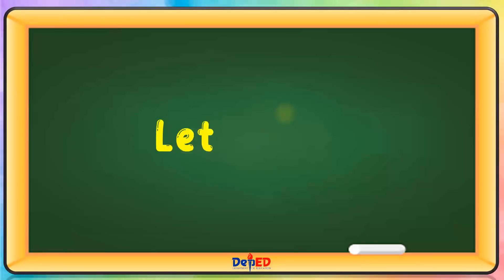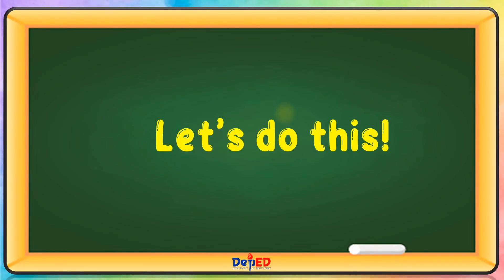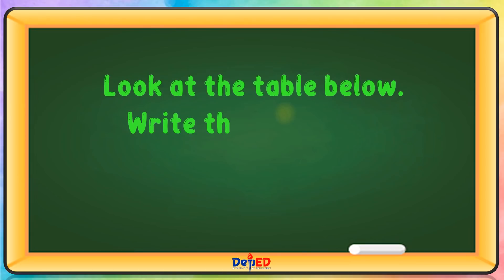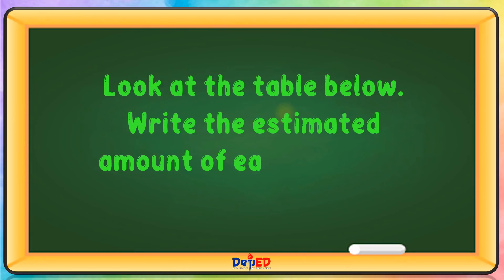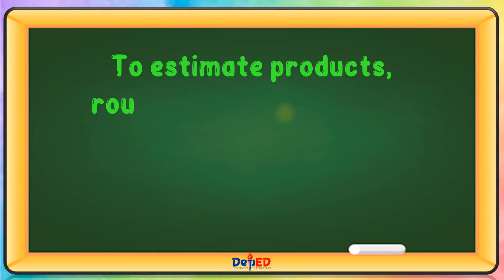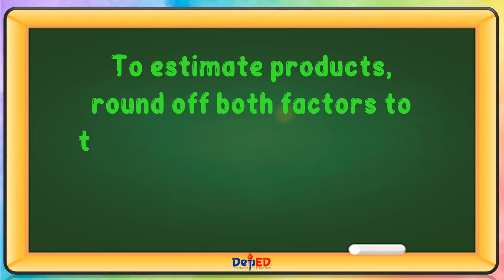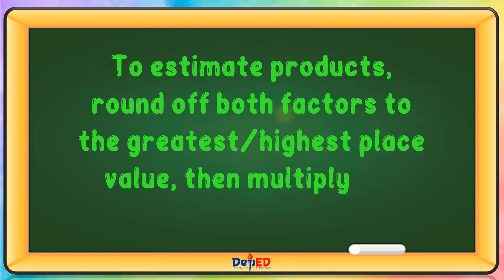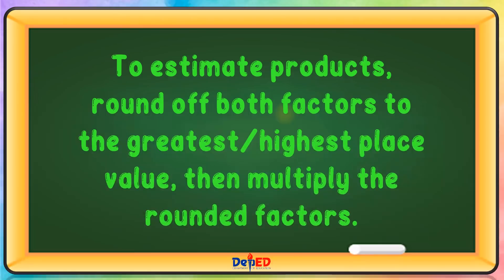Let's do this. Look at the table below. Write the estimated amount of each fruit and answer the questions below. To estimate products, round off both factors to the greatest or highest place value. Then multiply the rounded factors.